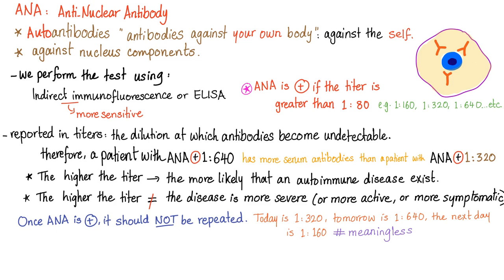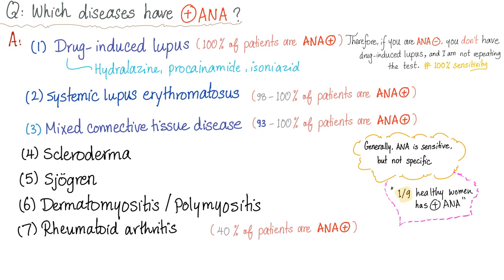If ANA is positive, you should never repeat the test because there is nothing new to learn. Diseases with positive ANA include drug-induced lupus, systemic lupus erythematosus, mixed connective tissue disease, scleroderma, Sjögren's, dermatomyositis, polymyositis, and rheumatoid arthritis. One out of every nine healthy women has a positive ANA, so it doesn't mean anything when it's positive. But when it's negative, it can help rule out disease because it has more sensitivity and less specificity.